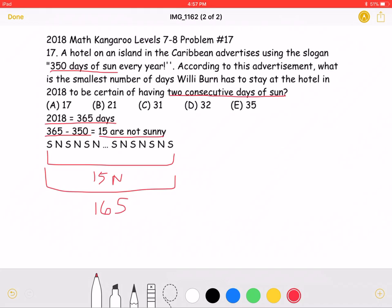As you can see, we do not have two consecutive days of sun, which is what the problem is asking for. That means that we must have one more day of sun, either here at the beginning or here at the end,